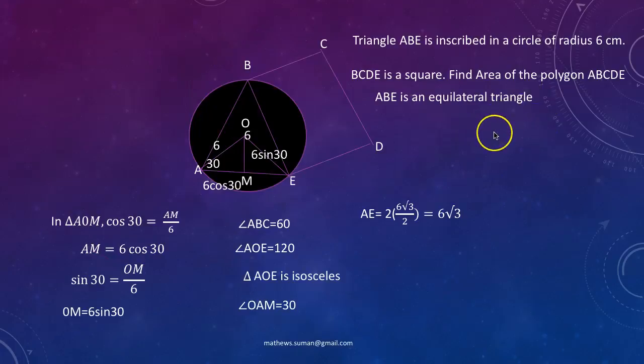This is a problem which involves equilateral triangle and part of circles. Triangle ABE is inscribed in a circle of radius 6 centimeters. BCDE is a square. Find area of the polygon ABCDE given that ABE is an equilateral triangle.